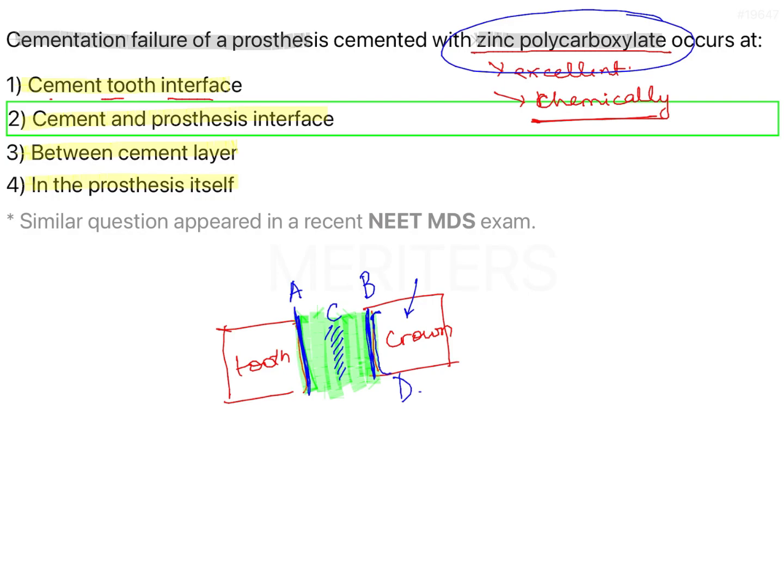So the correct answer is option number two: at the cement and prosthesis interface — that is where the bond failure is going to occur. Now on a parallel note, a few questions from zinc polycarboxylate, because it is a very neglected topic.